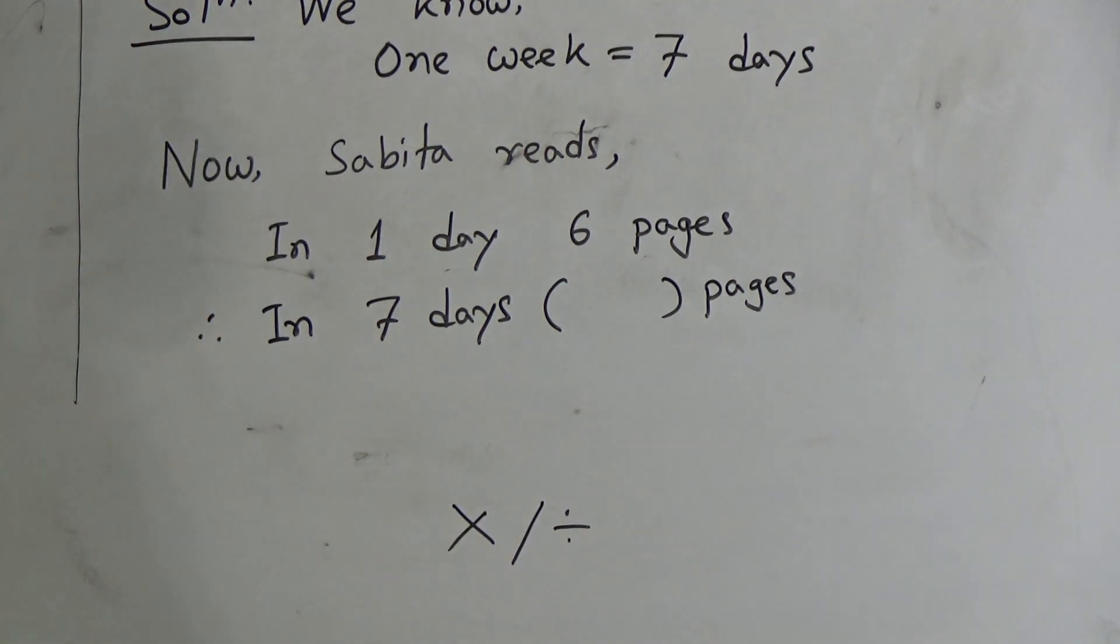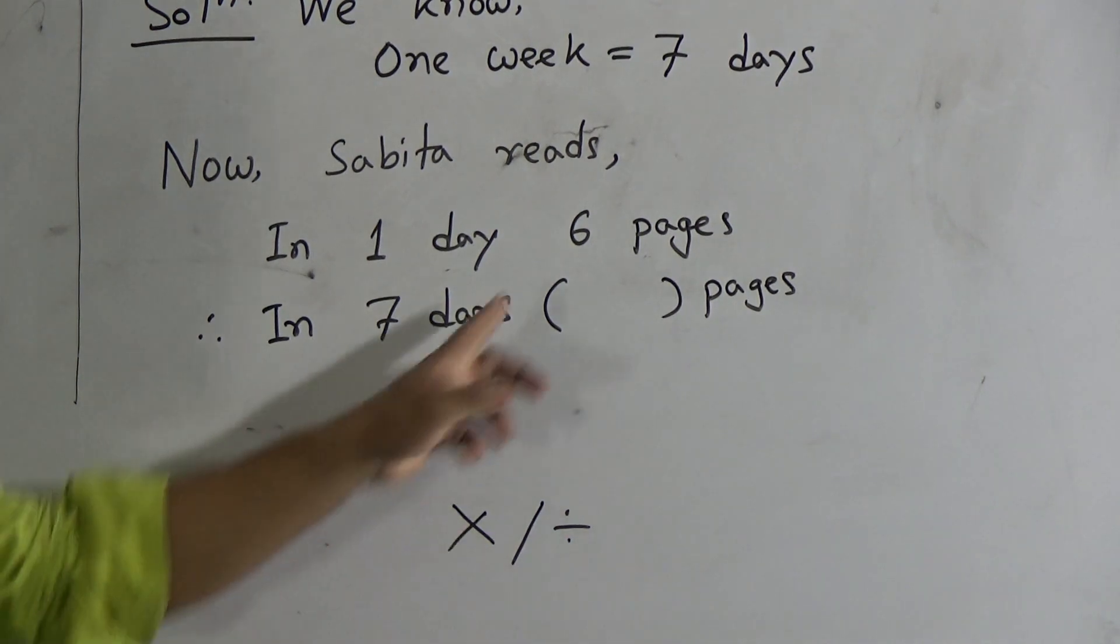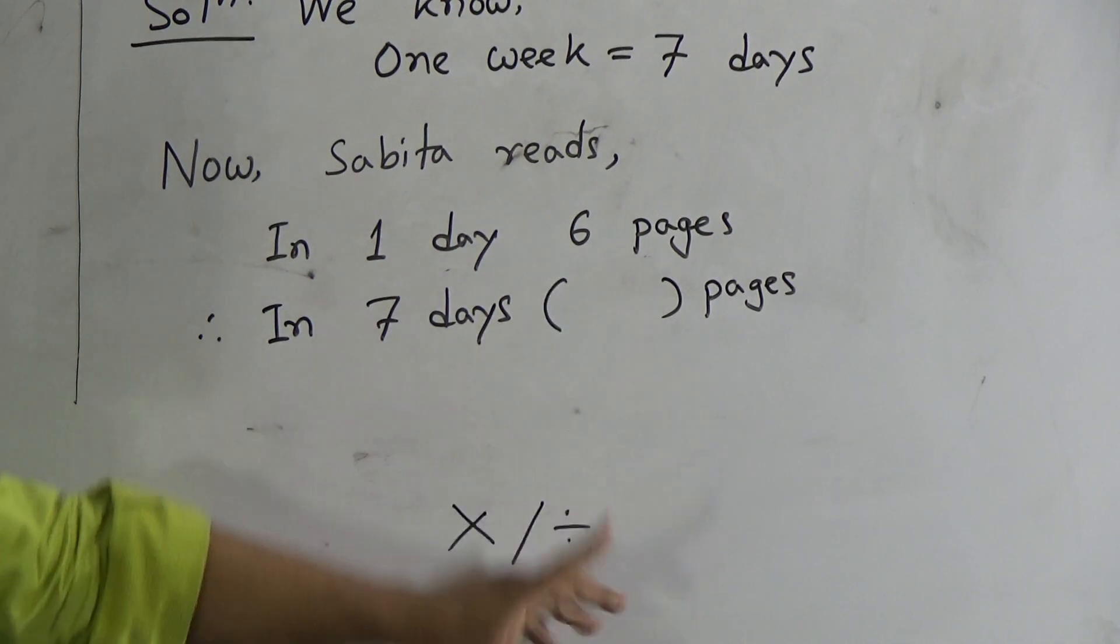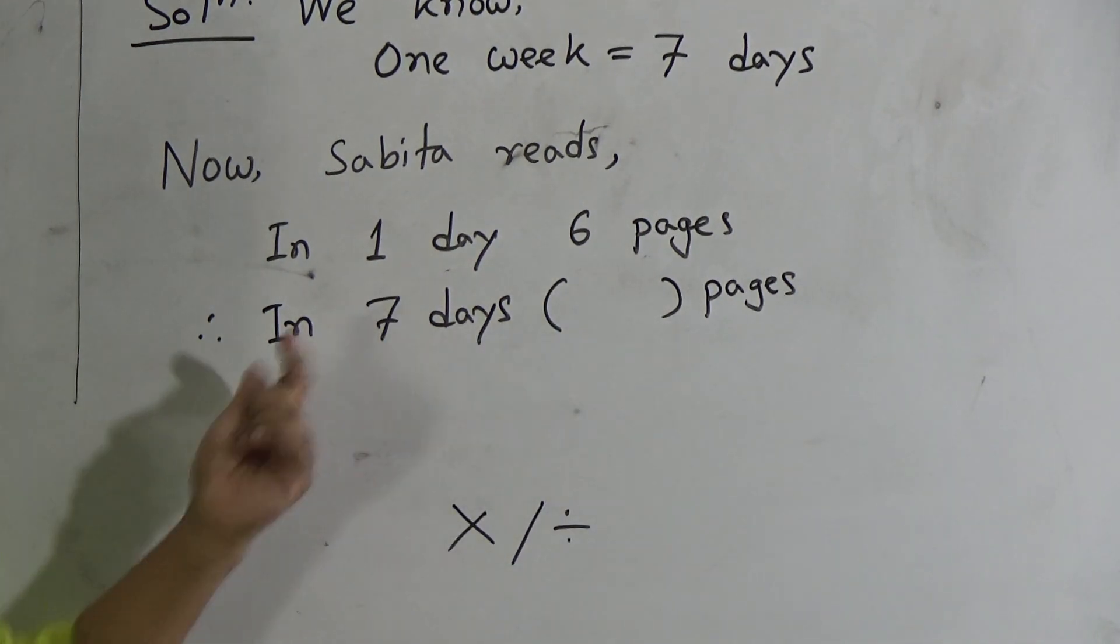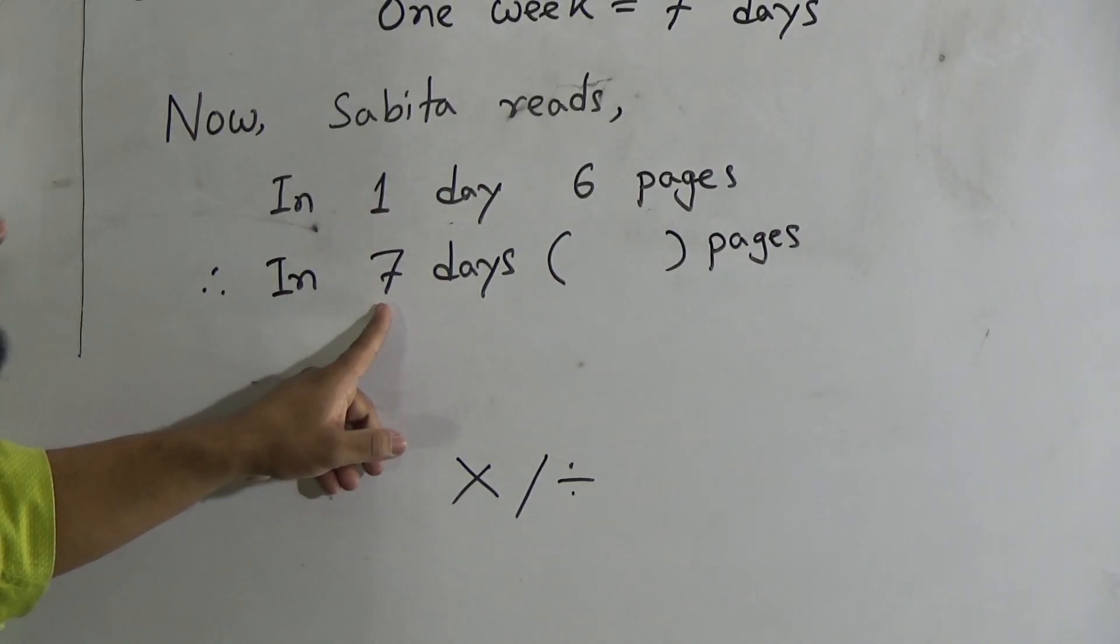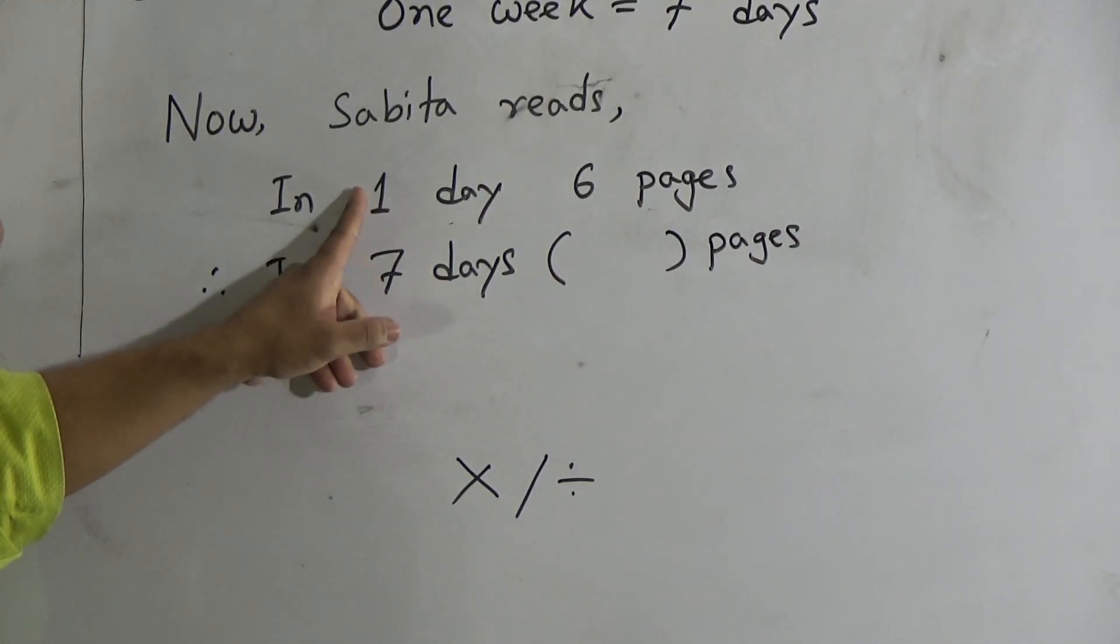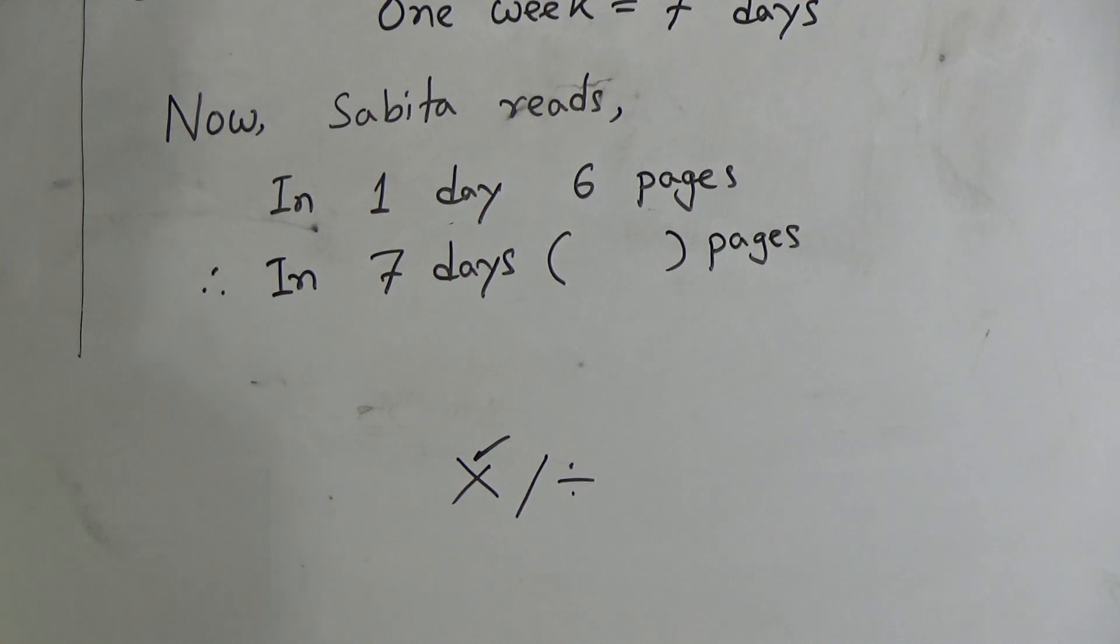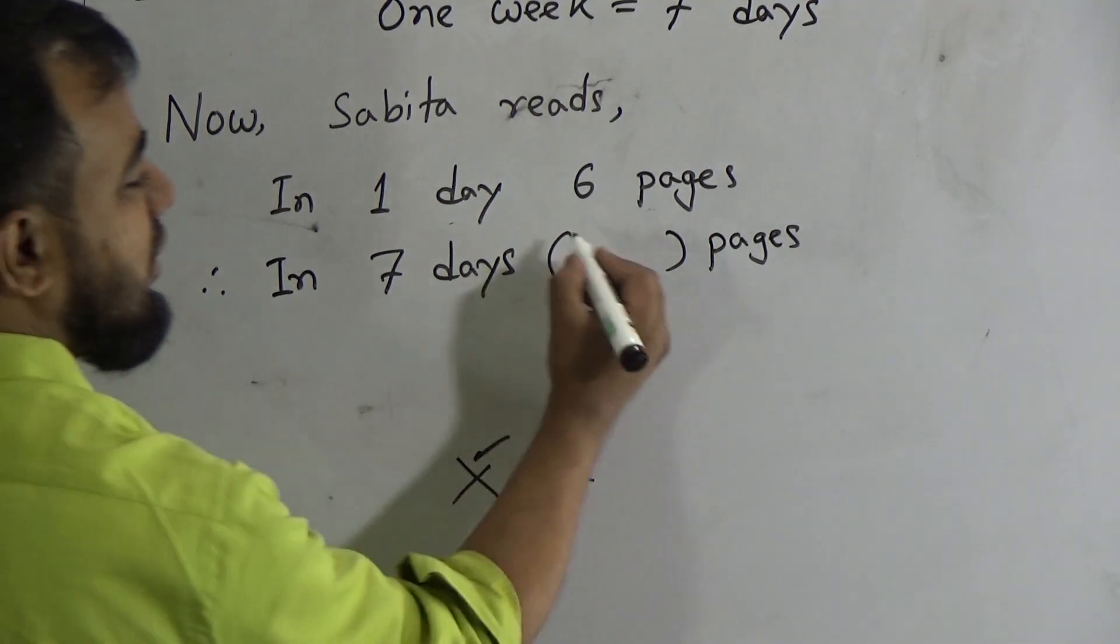Now, if we have, in the right side, in the first line, right side, 1, then we should divide. Is it 1 in the right side, first line, right side, is it 1? No, it's 6. So, we can't divide directly. Now, look at the left side. In the left side, we have 1 day, then it is increased by 7. That's why we will multiply, because when increase something, we will add or multiply. That's why we should multiply here.